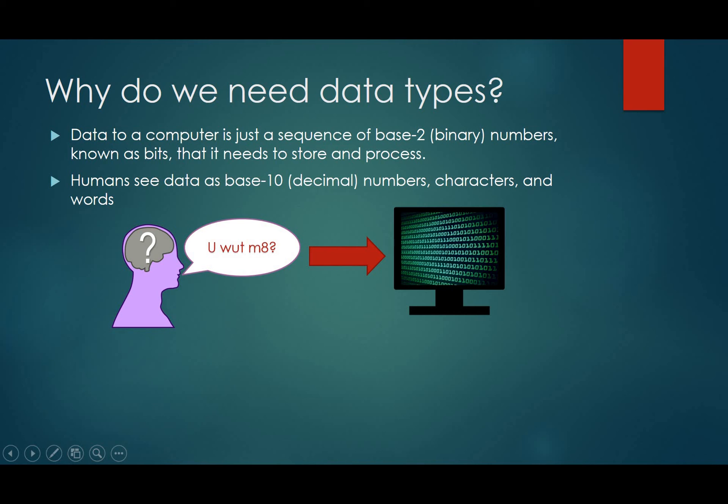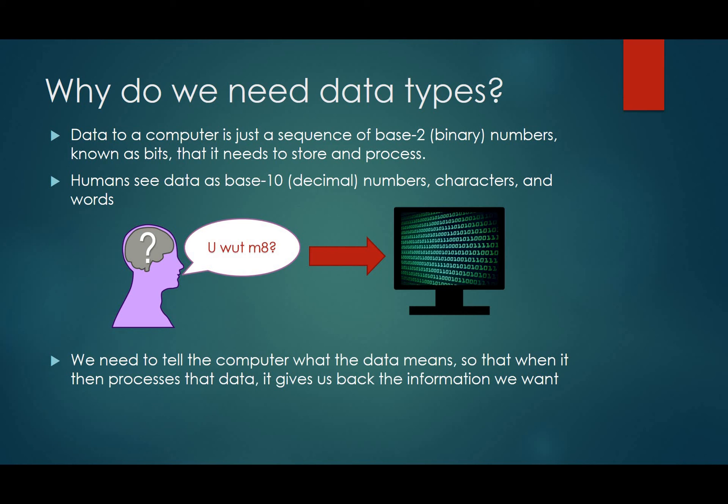Now, this is where data types come in, because data types tell the computer what the data means to us. So that when we give the computer a piece of data, it makes it into binary, and then when it's done processing it, it gives us back in the way that we want it. You know, maybe a base 10 number or character or word. We don't want the binary form of a word, right? That would just look ridiculous. So we need the data types to allow the computer to know what we want after it's done with it.